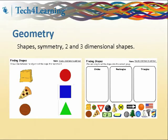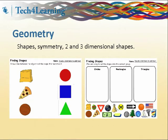Geometry in the primary classroom focuses on reasoning with shapes and their attributes. Students can use Pixie and Wixie activities to classify shapes and represent them with everyday objects, and to create projects that require them to apply knowledge about shapes and their functions.